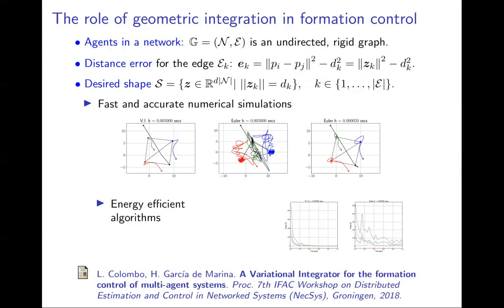The agent's interaction is described by an undirected, time-invariant, and rigid graph. Convergence to the set of desired shapes is given by studying the error dynamics for the relative distance error to the desired formations.